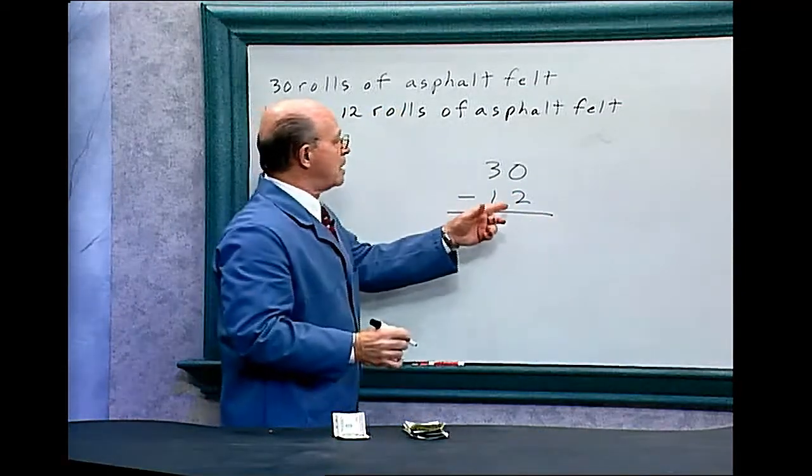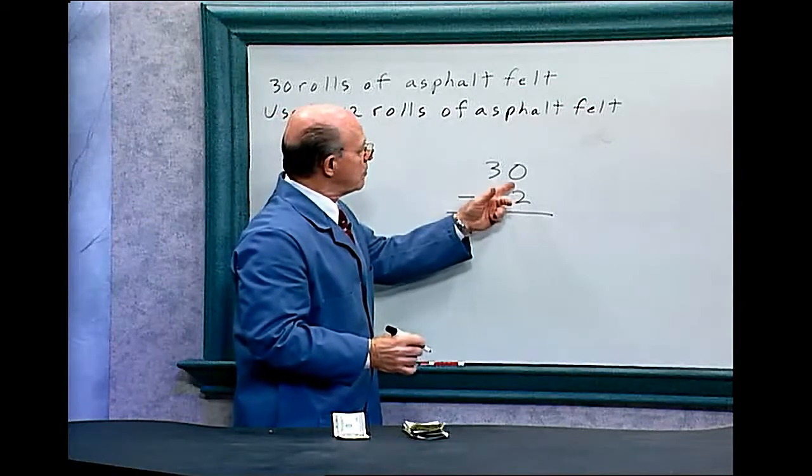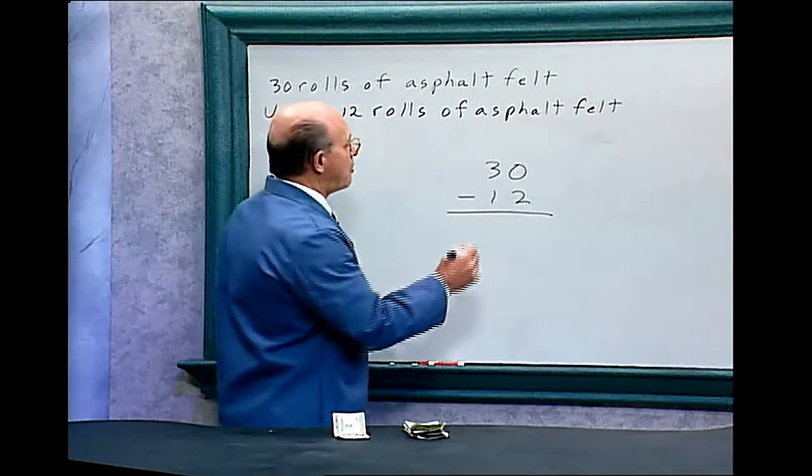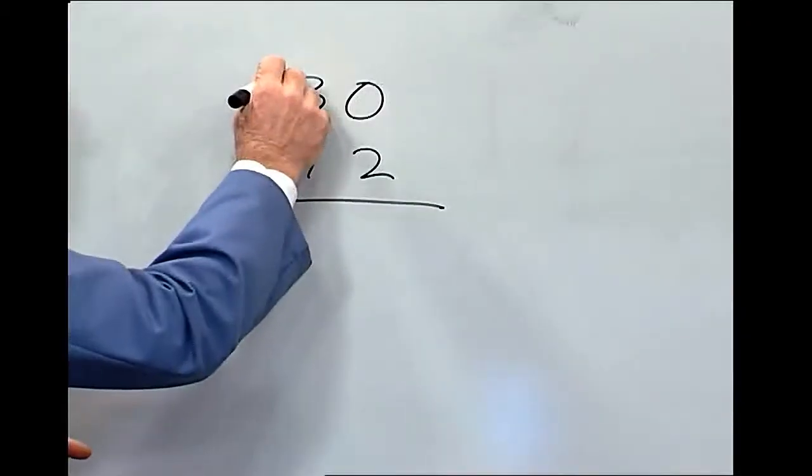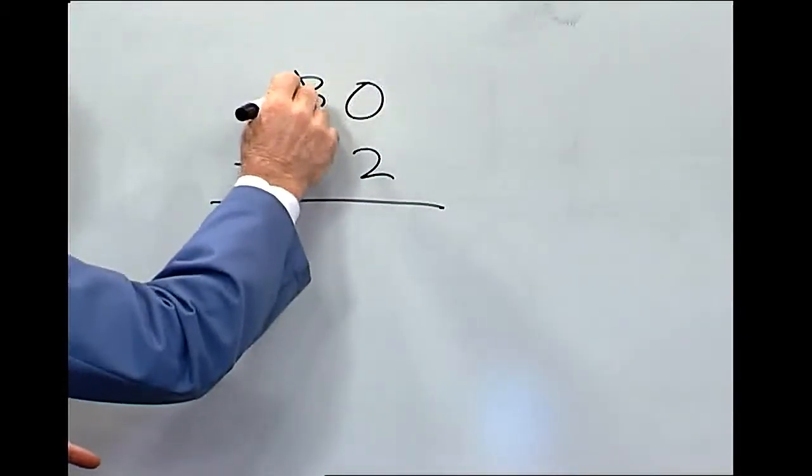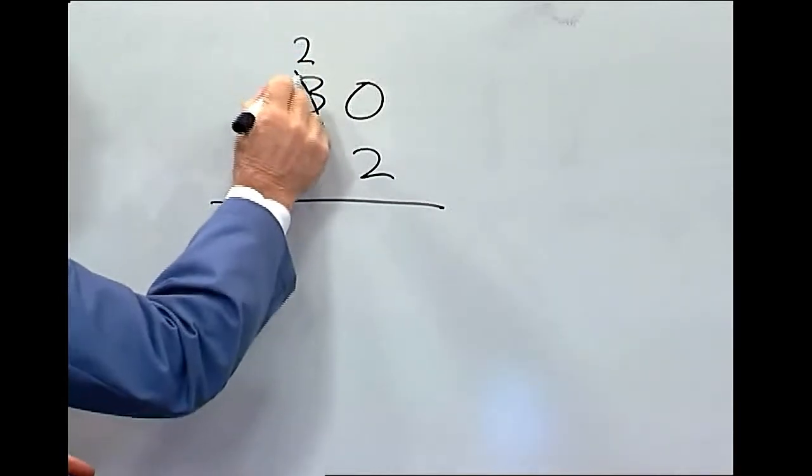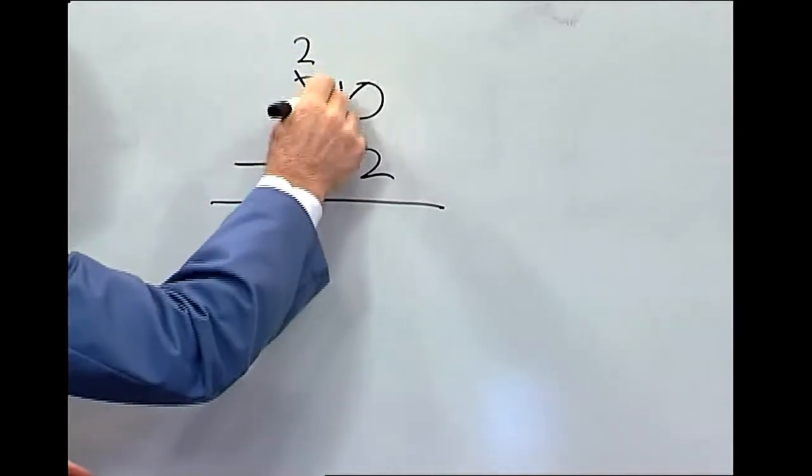Now you cannot take 2 from 0. You have to borrow. So what we're going to do, we're going to take one 10 from the tens column, make this a 2. We're borrowing a 10 and we're making this 10.